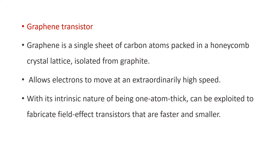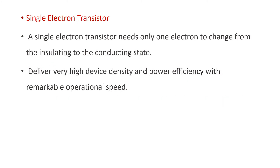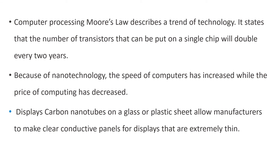Graphene is a single sheet of carbon atoms packed in a honeycomb crystal lattice isolated from graphite. It allows electrons to move at an extraordinarily high speed. With its intrinsic nature of being one atom thick, it can be exploited to fabricate field effect transistors that are faster and smaller. A single electron transistor needs only one electron to change from the insulating to the conducting state. It delivers very high device density and power efficiency with remarkable operational speed. Moore's law states that the number of transistors that can be put on a single chip will double every two years. Because of nanotechnology, the speed of computers has increased while the price of computing has decreased.